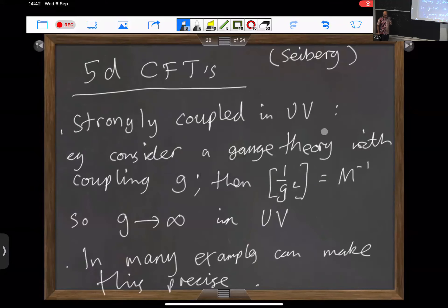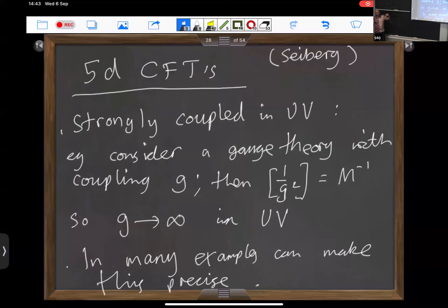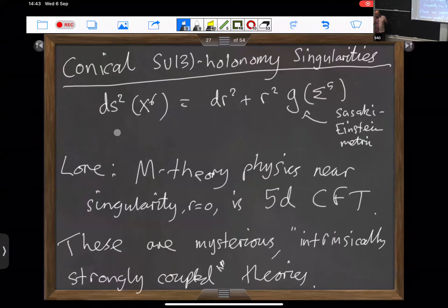Some people have argued, doing calculations in perturbation theory, that maybe ordinary Yang-Mills theory has a conformal fixed point in the ultraviolet. In the framework we're considering, we're talking about supersymmetric theories that arise from decoupling bulk degrees of freedom in M-theory from a system that arises at R equals zero.